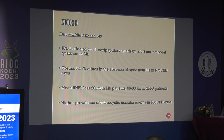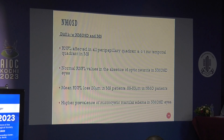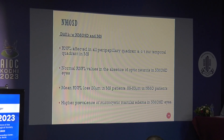Coming to NMO spectrum disorders: in NMO, RNFL is affected in all quadrants compared to MS where mostly the temporal quadrant is involved. In NMO spectrum disorder, if optic neuritis has not yet occurred, you can find normal RNFL values, whereas in MS even without an optic neuritis attack you see deranged values. Mean RNFL loss in MS is around 20–30 micrometers, whereas in NMO disorders it is much more profound — around 55 to 83 micrometers — and there is a higher prevalence of microcystic macular edema in NMO spectrum disorder.